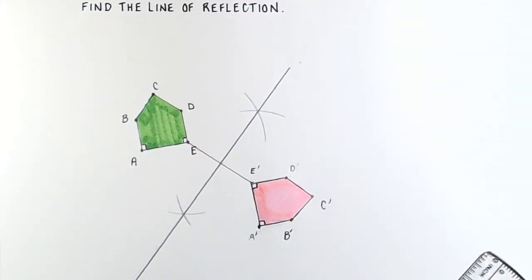So, that is how you construct the line of reflection when you are given two figures that have already been reflected.